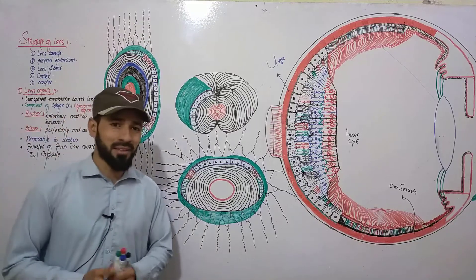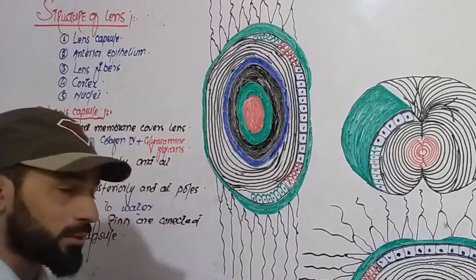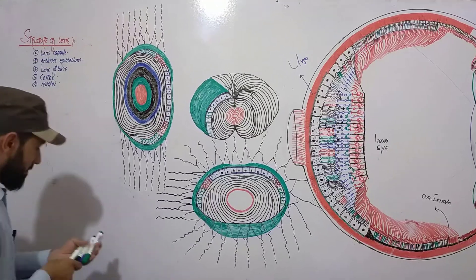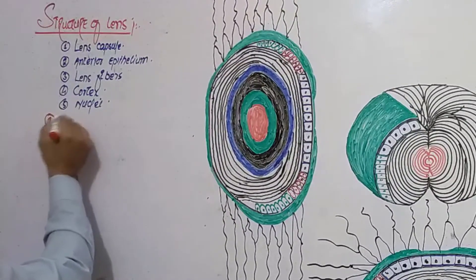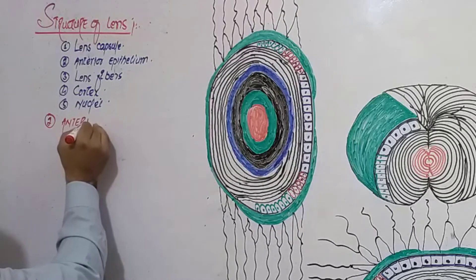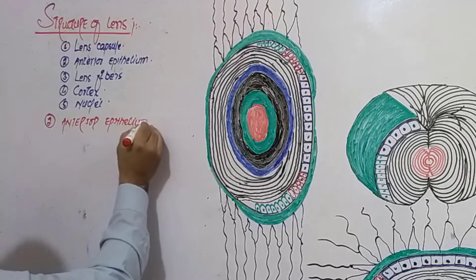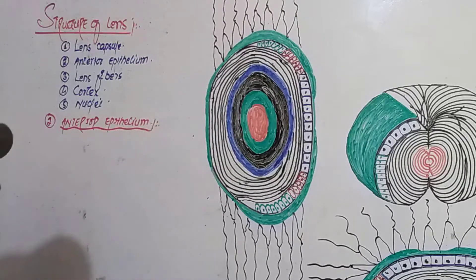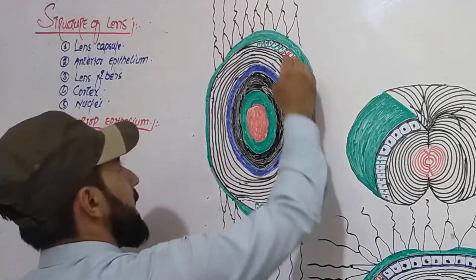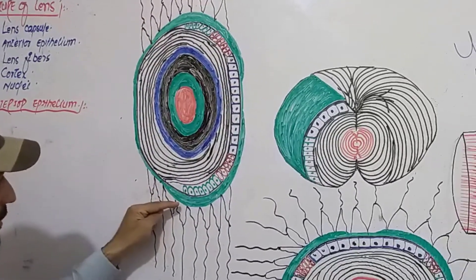Welcome back. In the previous lecture I discussed the lens capsule and showed all the parts. Now we are discussing the anterior epithelium of the lens. It is called anterior because it is present anteriorly. In the adult nucleus, the epithelial cell layer is only present on the anterior surface of the lens. The posterior surface curvature is a little larger than the anterior surface.